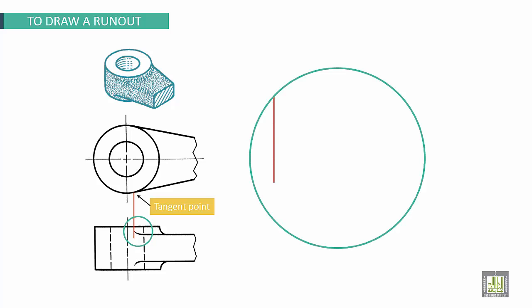This is called a run-out here. How to draw it? By using zoom here you can see, this is the intersection lines.